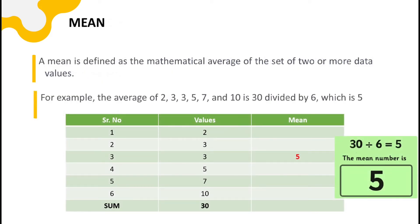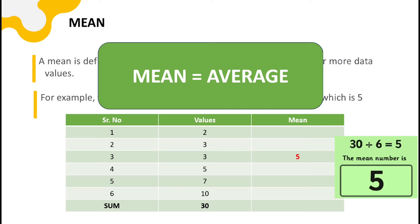The next concept is mean. Mean is defined as the mathematical average of a set of two or more data values. Mean is determined in the same way as average — taking the same set of numbers, the sum is 30 divided by 6 values, giving a mean of 5. There are certain differences between average and mean, but that is not required in the scope of this subject. We just need to understand these concepts.